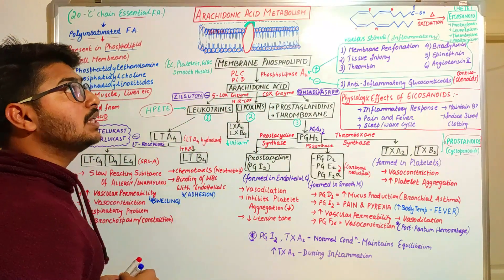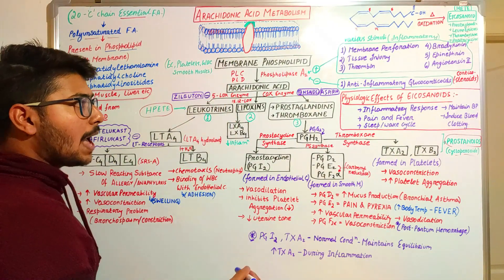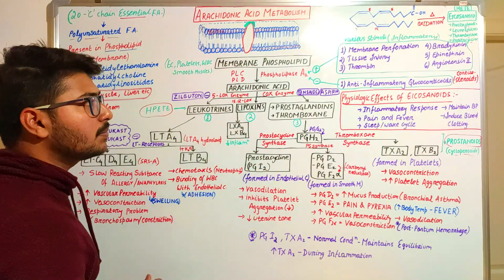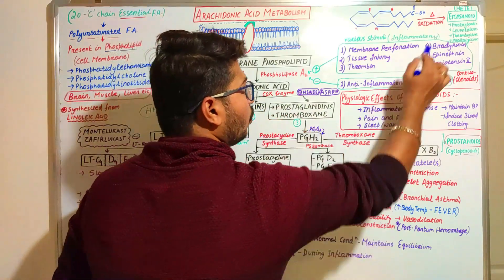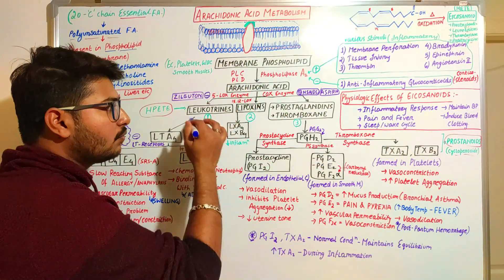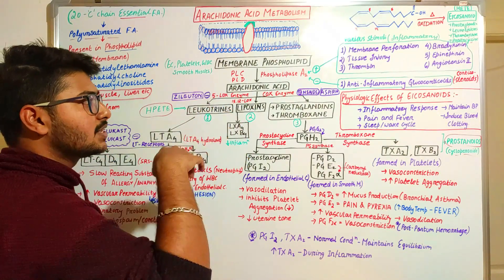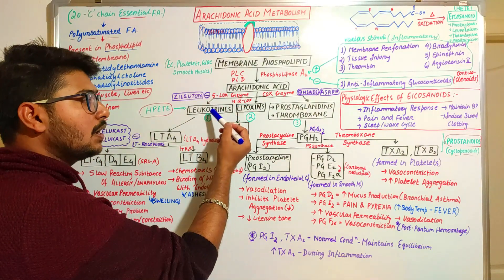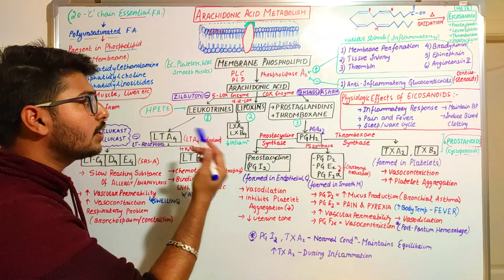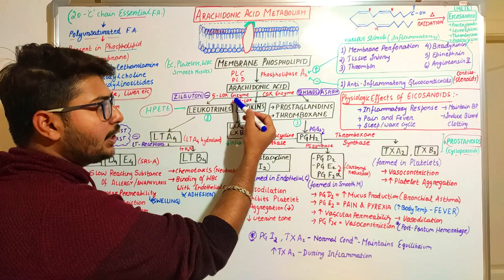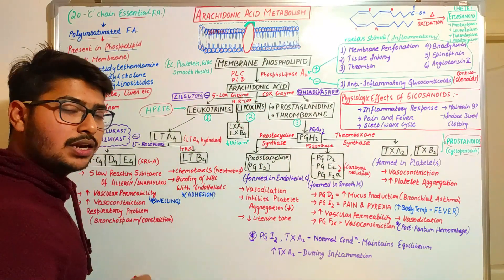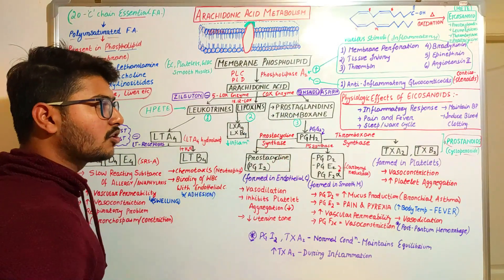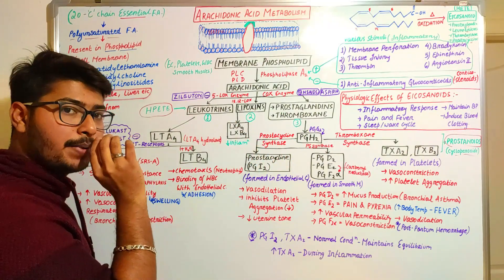From the free arachidonic acid, the actual metabolism starts. The COX enzyme and LOX enzyme break arachidonic acid into metabolites collectively known as eicosanoids. The enzymes are: 5-lipoxygenase, 15/12-lipoxygenase, and cyclooxygenase. The 5-LOX enzyme produces leukotrienes; 15/12-LOX enzyme produces lipoxins; and the COX enzyme produces prostaglandins and thromboxane.